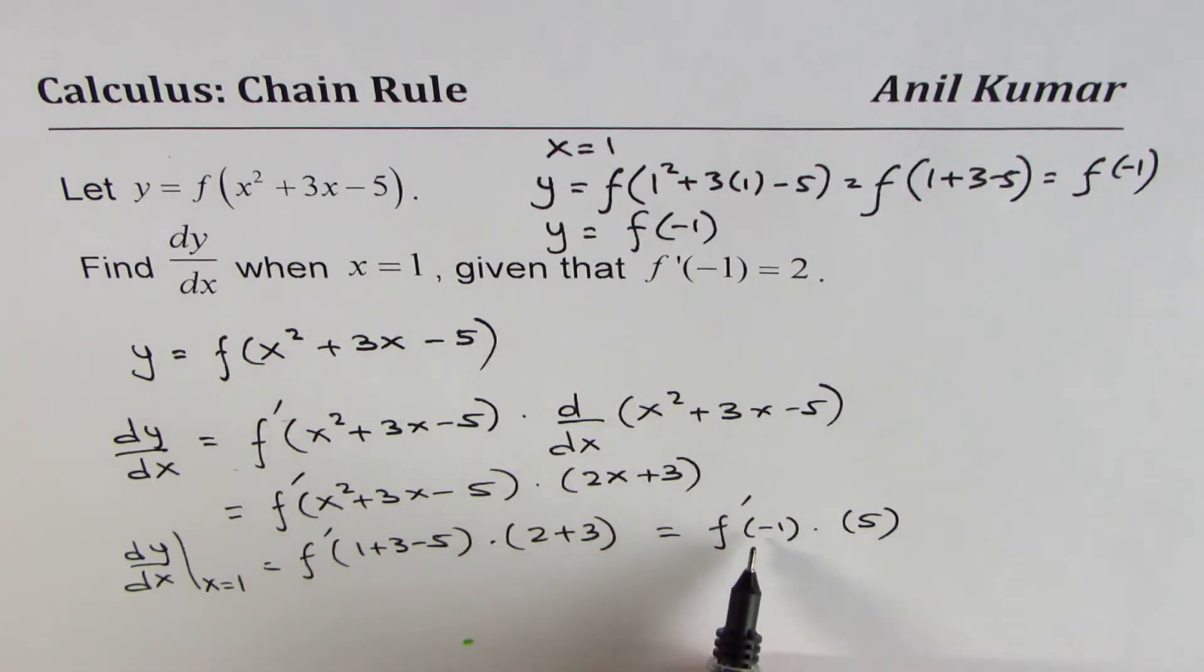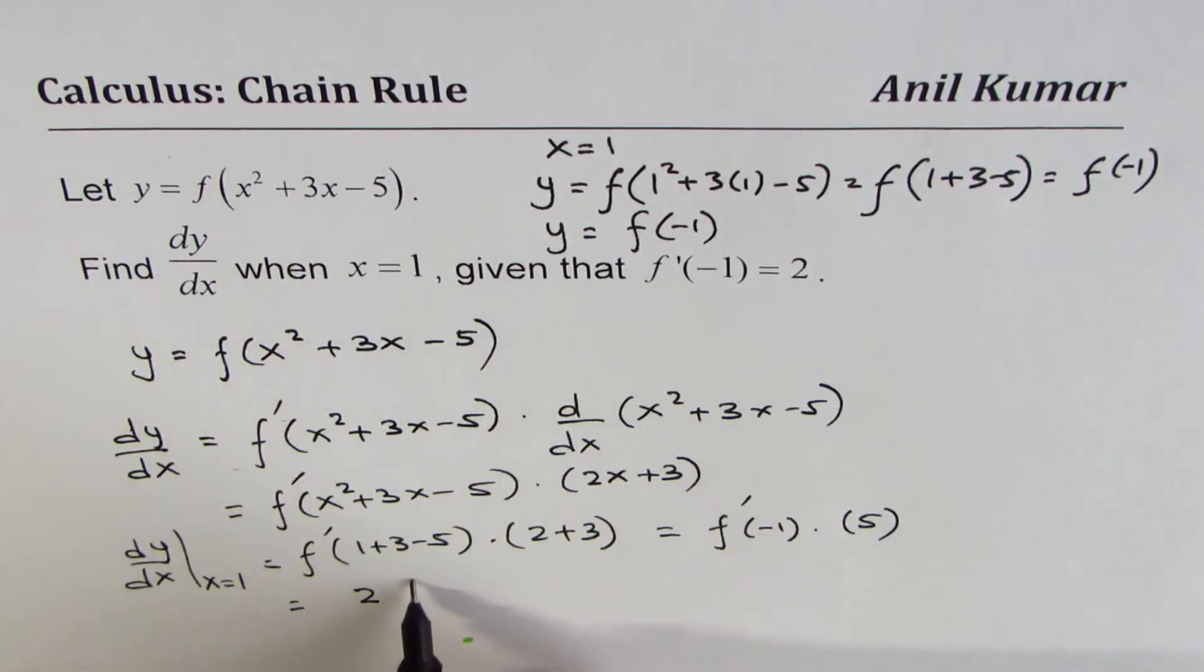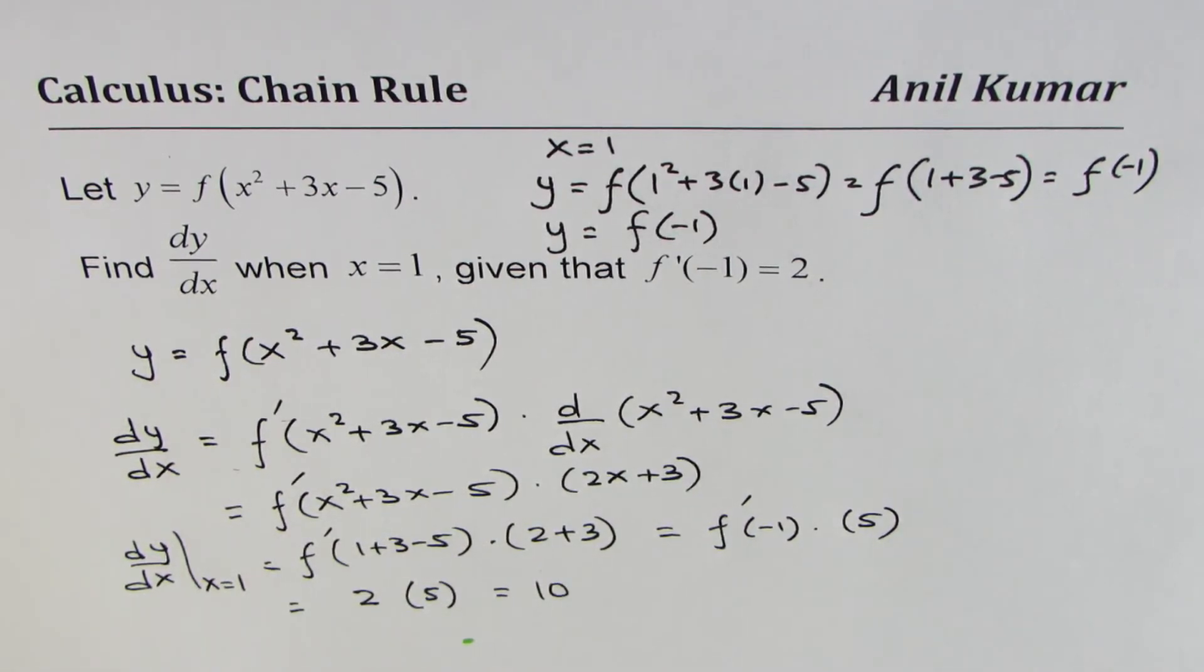We are given the derivative of the function at minus 1 as 2. So we could write this as 2 times 5, and so we get 10 as our answer. That is how we could solve such an equation. I hope it's absolutely clear. Thanks for your time.